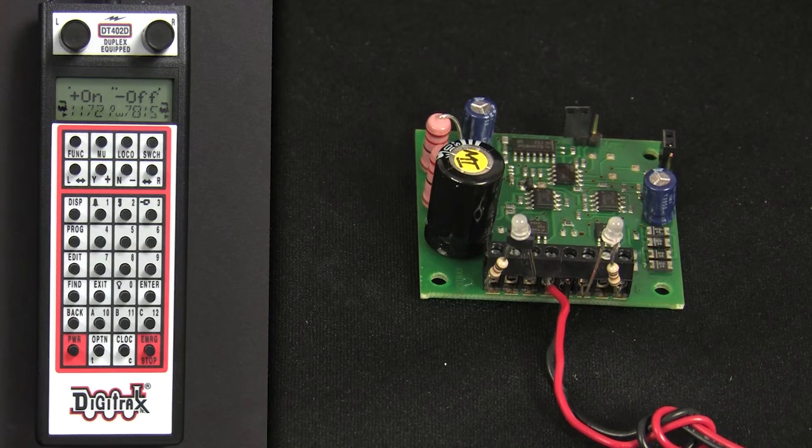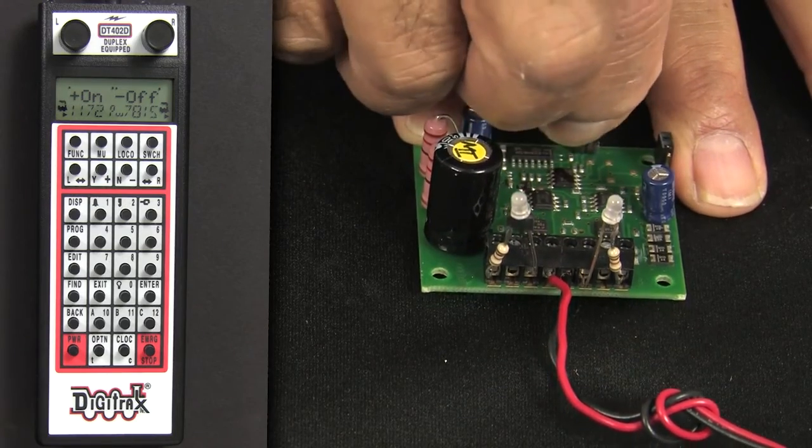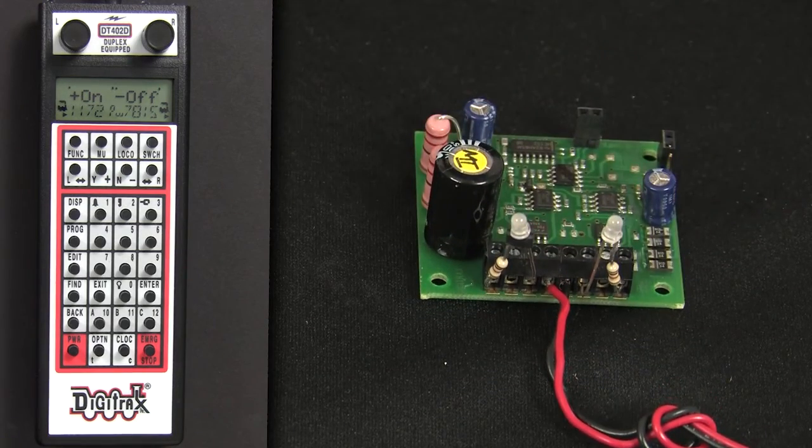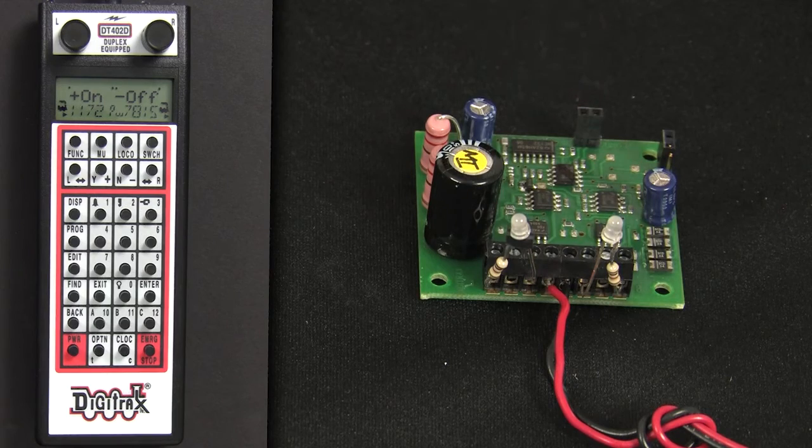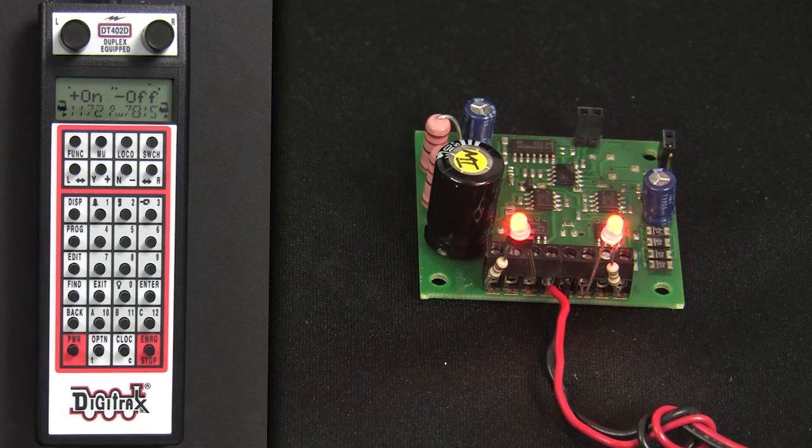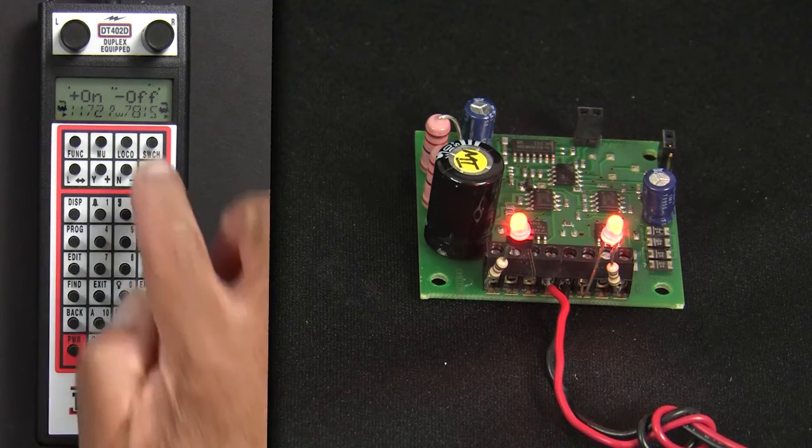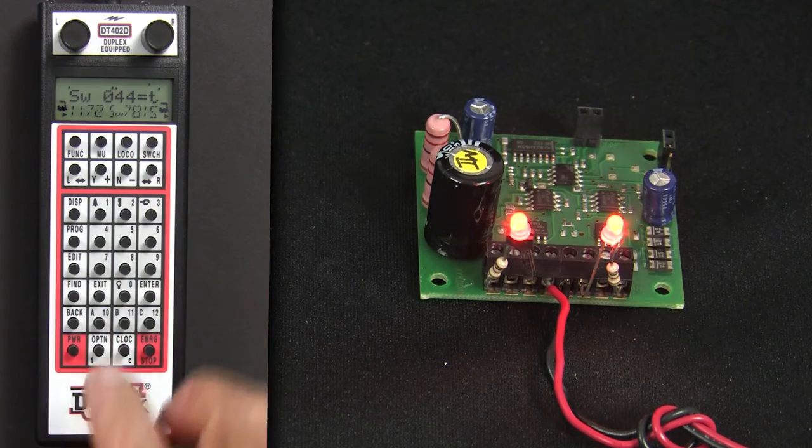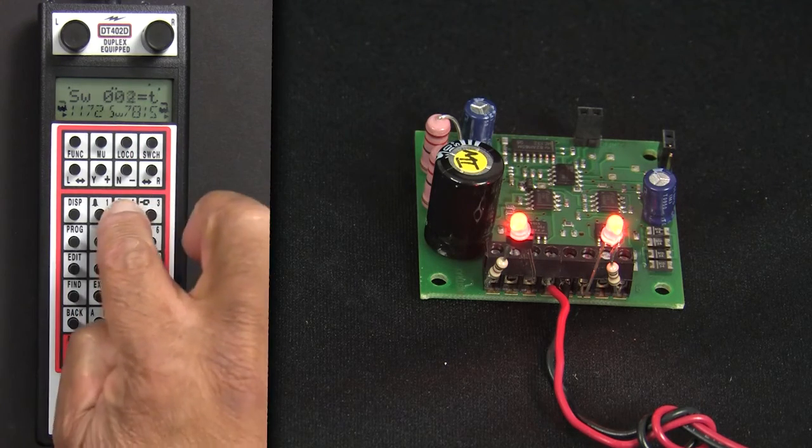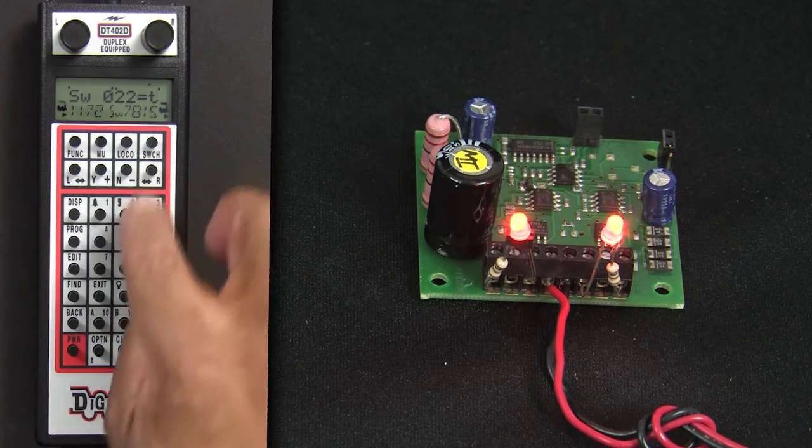Next, move the configuration jumper to the closed position. Turn power back on. And the machine is now configured to control slow motion switch machines. In this case, we have switches 22 and 44.